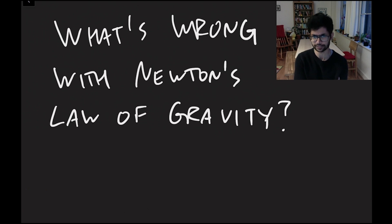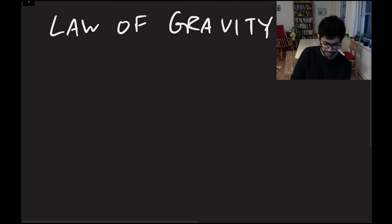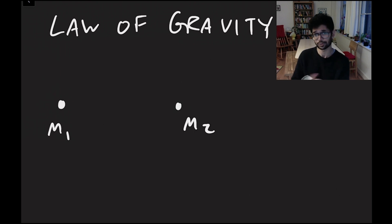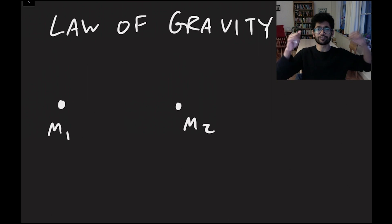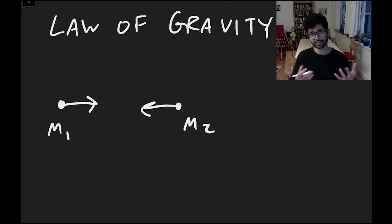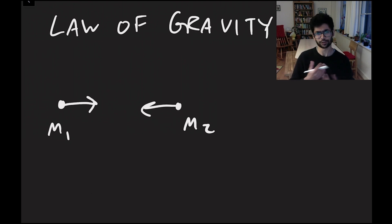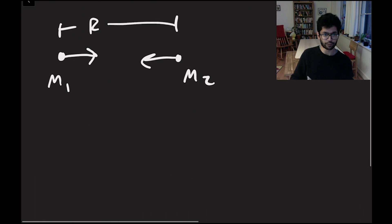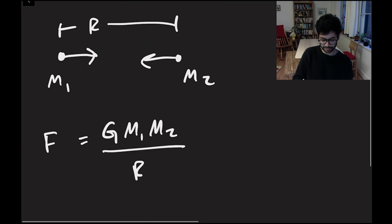Let me begin by reminding everyone what Newton's law of gravity is. Newton's law of gravity says that if you have two objects — two masses m1 and m2 — then these two things will feel a force that attracts them towards each other. Every mass in the universe attracts every other mass. If the two of them are separated by a distance r, then the force between them is given by Newton's constant times m1 times m2 divided by r squared.